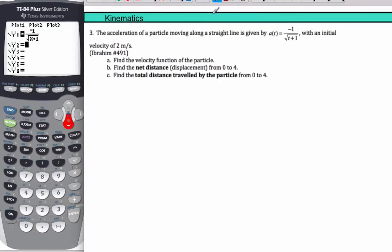Okay, so another kinematics problem here. We are told the acceleration of a particle on a straight line is given by this function here with this initial velocity. Find the velocity function of the particle.